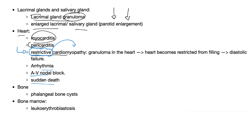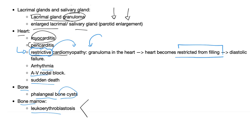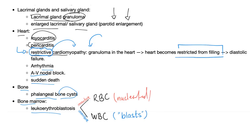In both restrictive cardiomyopathy and restrictive lung disease, the organ is restricted from filling. In the bone, you'll see phalangeal bone cysts. In the bone marrow, you can see leukoerythroblastosis — meaning immature red blood cells and immature white blood cells are released. When RBCs are immature, they will have a nucleus. This occurs because granulomas have invaded the bone marrow.